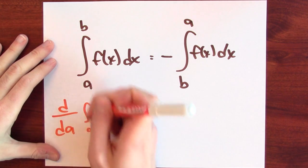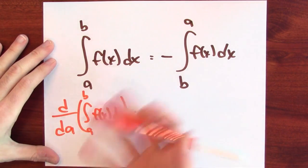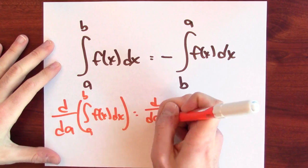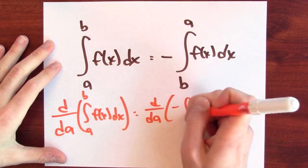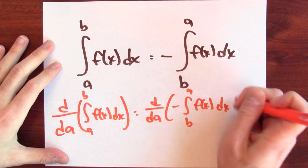Now, in light of this convention, what do we know? The derivative with respect to a of the integral from a to b of f of x dx is the derivative with respect to a of negative the integral from b to a of f of x dx.